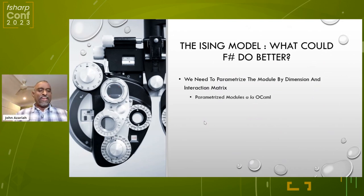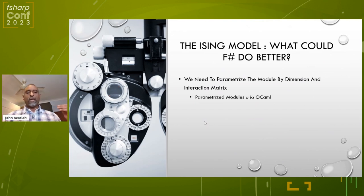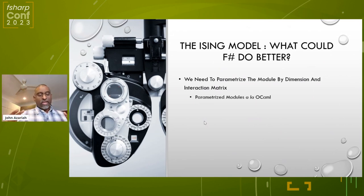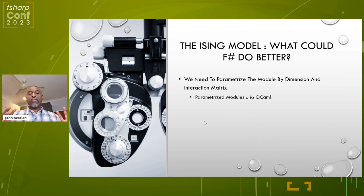However, it would not be an FSharp talk from me if I didn't point out what we ought to do to the language to make it better. In this particular case, we parametrize the entire Ising model by what the interaction matrix is — and that's the interesting bit, because when you change the interaction matrix, you change the nature of the problem. If you want to model an NP-complete problem and try to use this mechanism, you need to provide an interaction matrix. We can't parametrize modules by doing this, so it would be nice if we had parametric modules. Then we could basically generalize this code to be super powerful — just implement the code in one place and pass in the parameters.